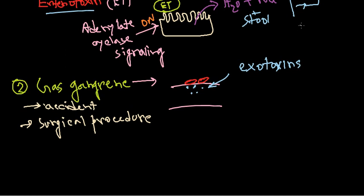These exotoxins are of different types: alpha, beta, gamma, and others. Among all of them the most dangerous are the alpha toxins. These alpha toxins have the capability of degrading the cellular layer and also degrading ground materials like hyaluronic acid and fibronectin. They can also degrade cells like red blood cells, giving them hemolytic properties.